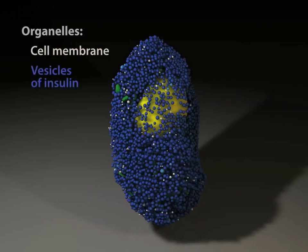The round insulin-secreting vesicles, color-coded here in blue, dominate the interior, 12,128 of them in total.